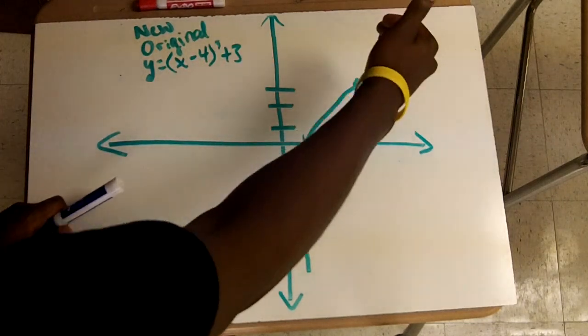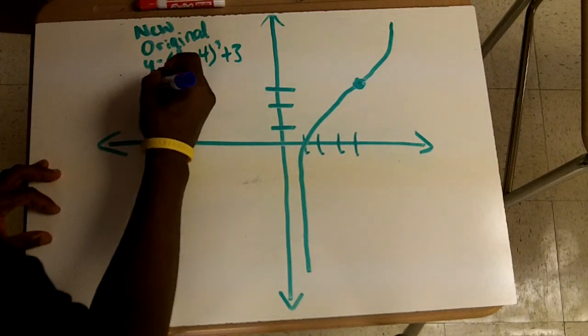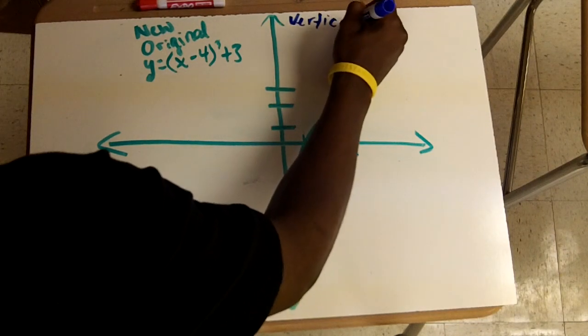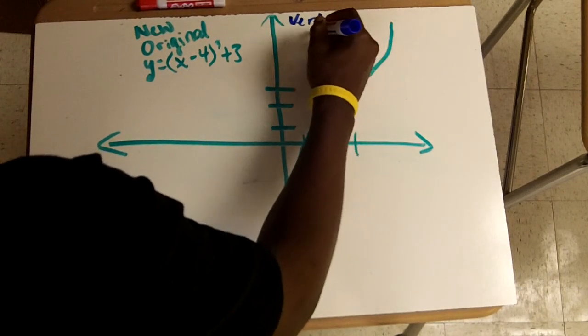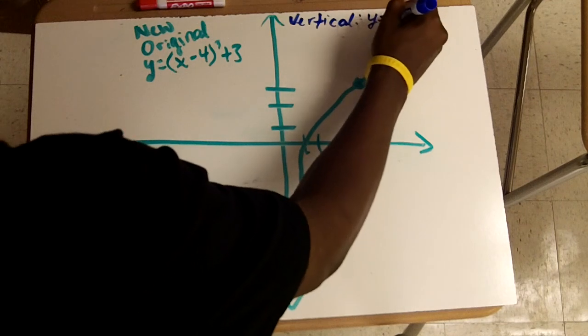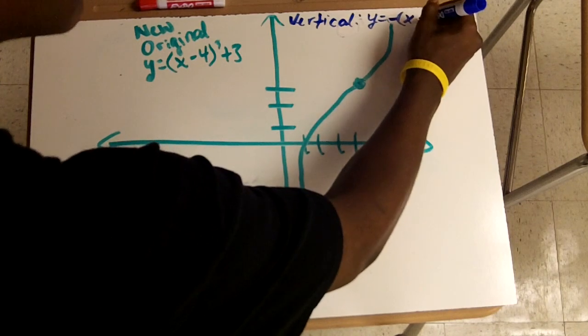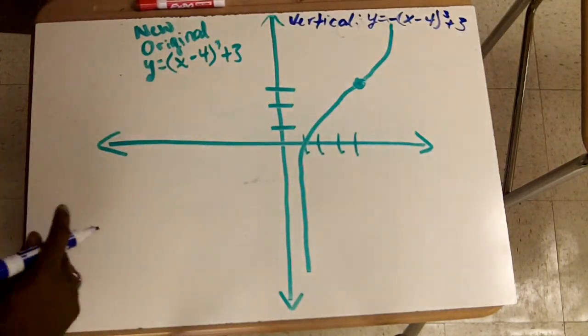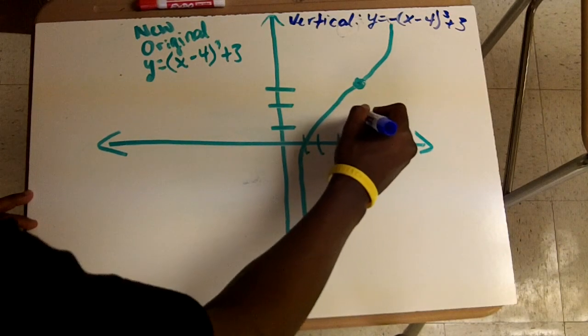Now when I want to flip it vertically, basically your function will look like this, and you want your negative to be on the outside. It will be negative times x minus four cubed, and you want your negative to be on the outside, plus three. And then when you flip it vertically, your graph will look something like this.